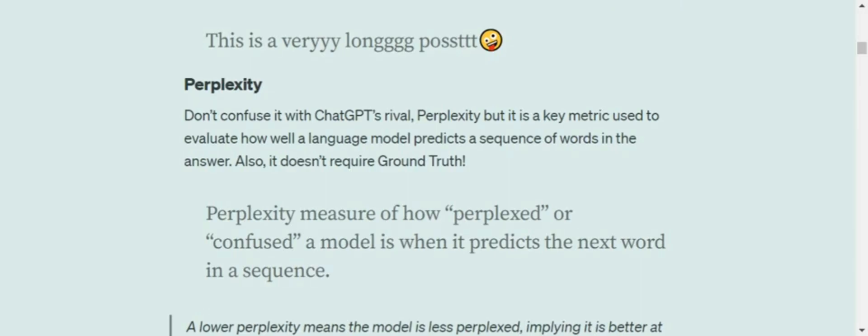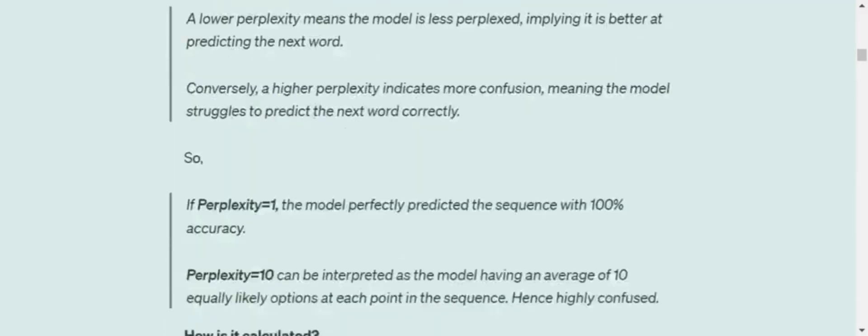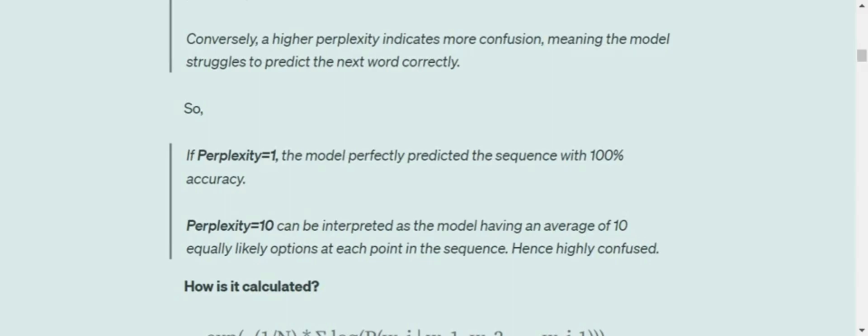The higher the perplexity, the more confused the model is, and vice versa. If perplexity equals 1, the model perfectly predicts the sequence with 100% accuracy.